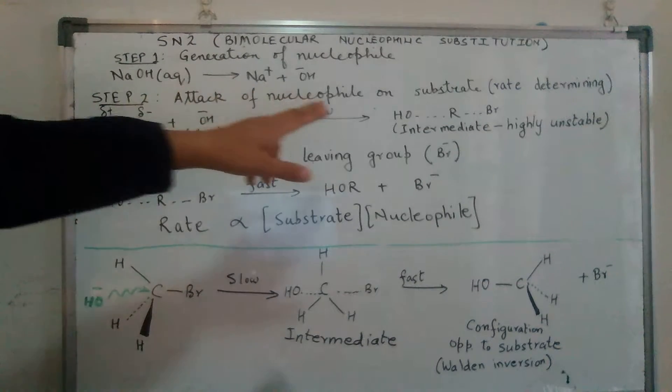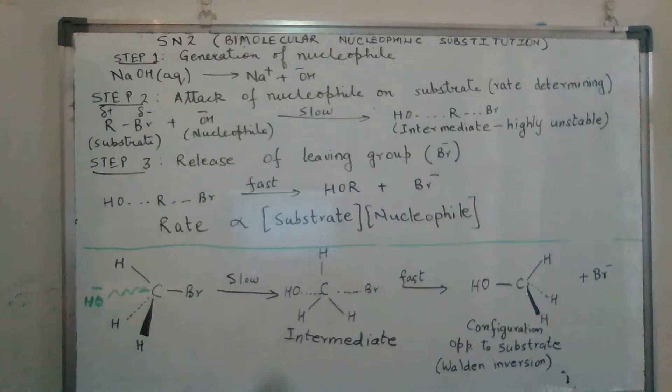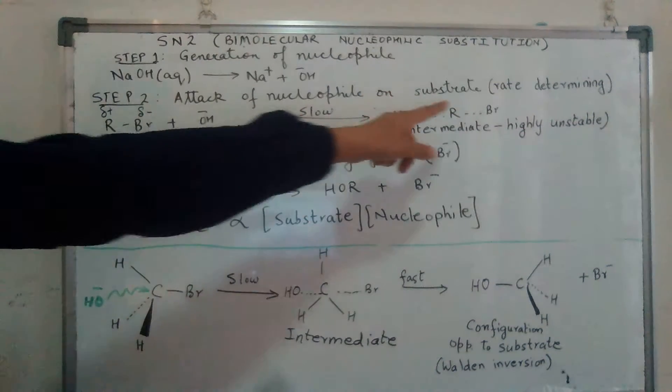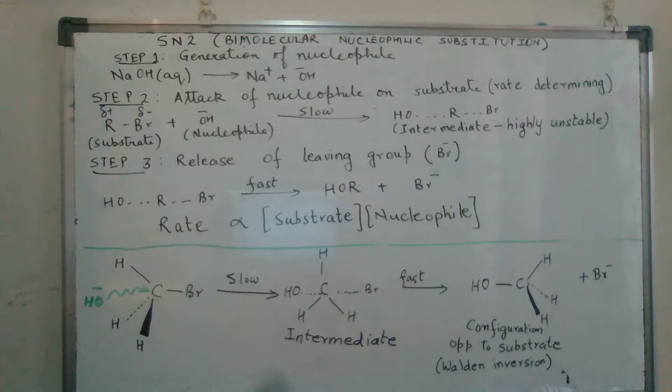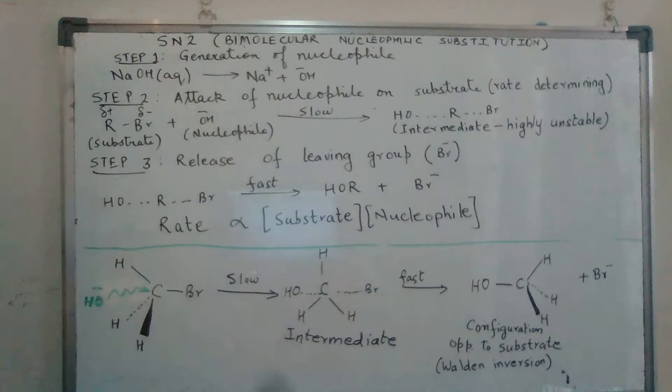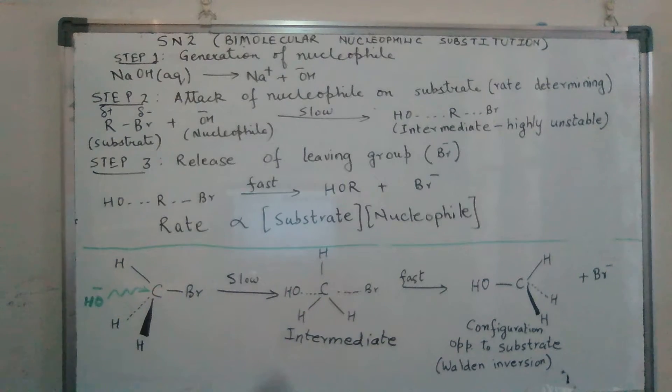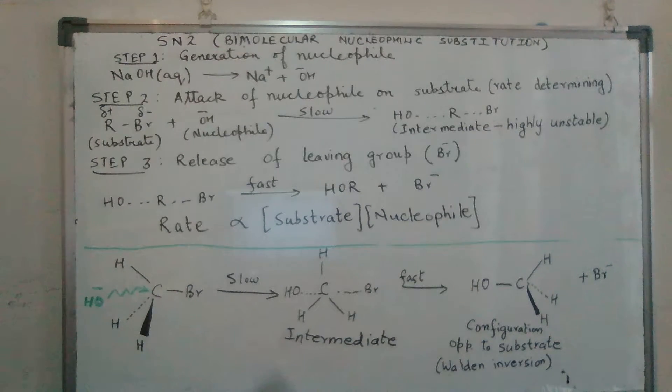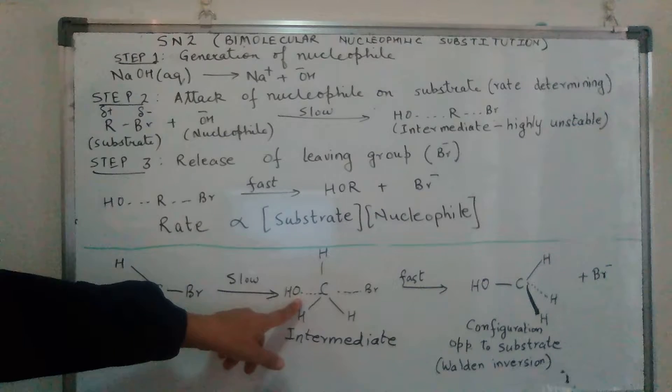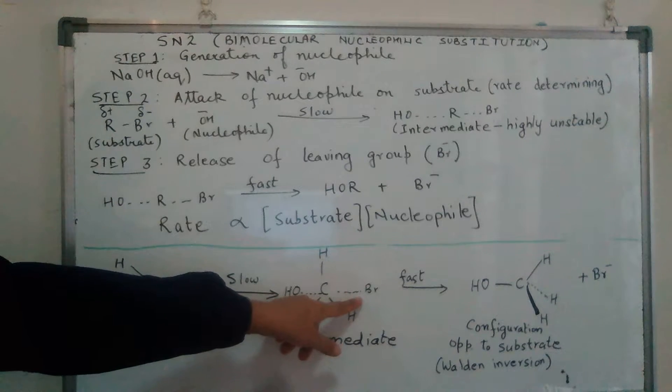So we have an intermediate stage where the nucleophile and the leaving group, that is my bromide over here, are at the same time connected to the carbon atom of the alkyl group. Although this intermediate stage involving a pentavalent carbon would be highly unstable, we have carbon showing tetravalency here - carbon is slightly bonded to the OH as well as the halide ion.